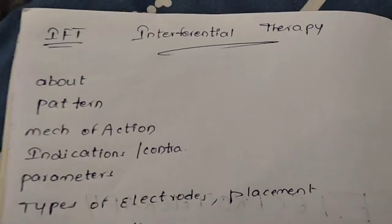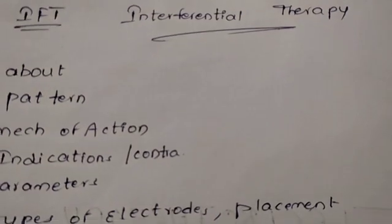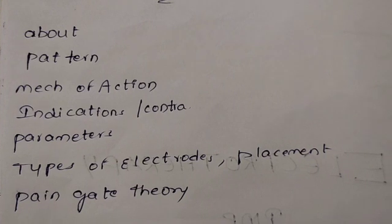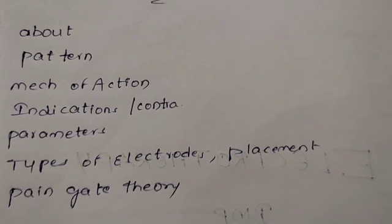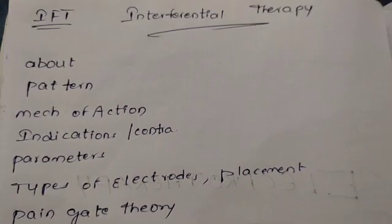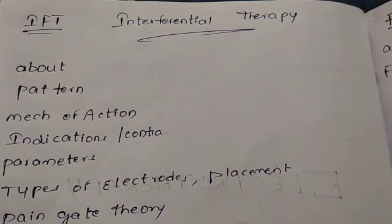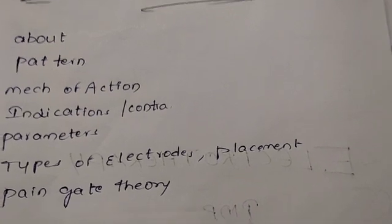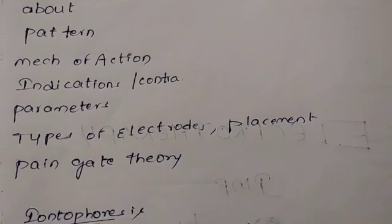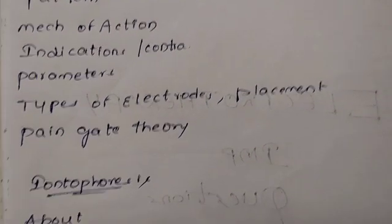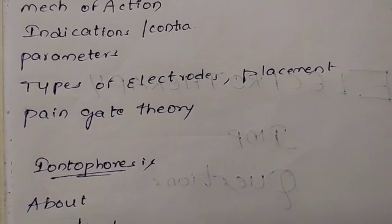So, starting with IFT — about the definition, Dhanugurins, and also patterns, mechanism of action, indications, contraindications, parameters, types of electrodes, and also placement. Pain gate theory is very important.